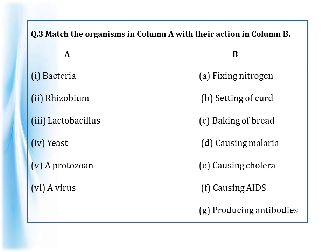The third question is match the organisms in column A with their actions in column B. In column A we have bacteria, rhizobium, lactobacillus, yeast, a protozoan, and a virus. Their actions are: fixing nitrogen, setting of curd, baking of bread, causing malaria, causing cholera, causing AIDS, and producing antibodies.